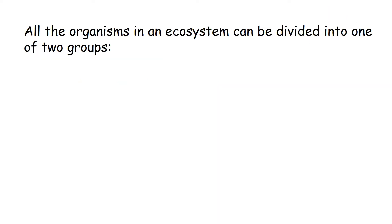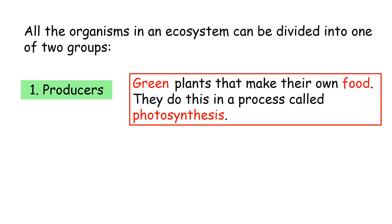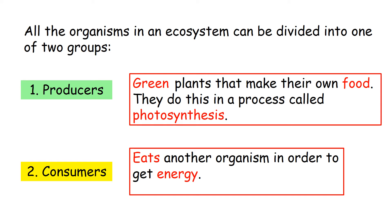All organisms in an ecosystem can be divided into one of two groups. They are either producers — green plants that make their own food in a process called photosynthesis — or they can be consumers. Consumers are any organism that eats another organism to gain energy.